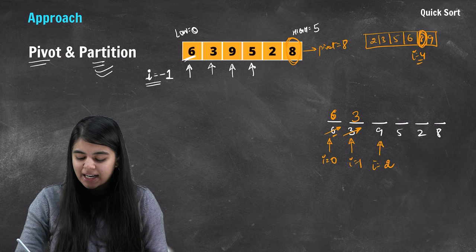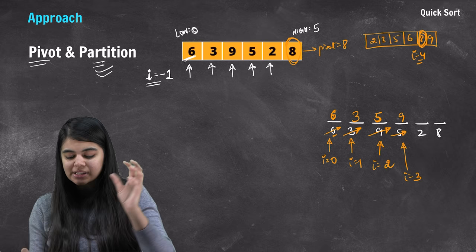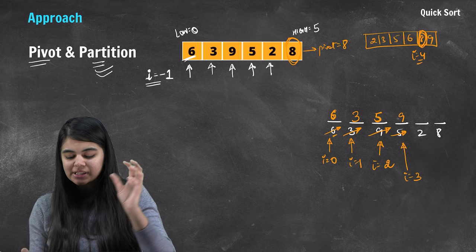Next element is 2. We compare 2 with 8 — 2 is smaller. So i increments again. We do the swap: 9 moves and 2 takes the small-element position. This completes placing all small elements. After this traversal, all small elements of the pivot are in the front portion of the array.